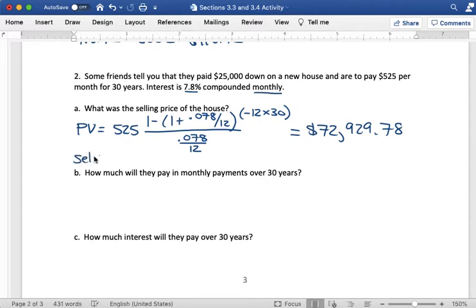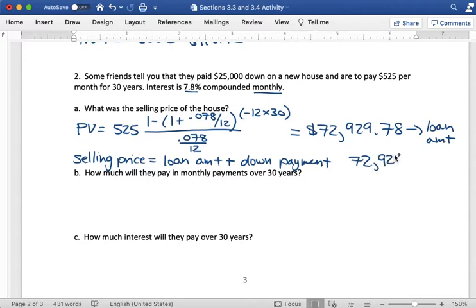So the selling price is equal to the loan amount plus the down payment. So I'm adding $72,929.78 plus $25,000. That gives us $97,929.78. So that's the selling price of the house.